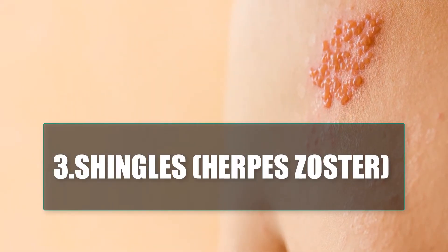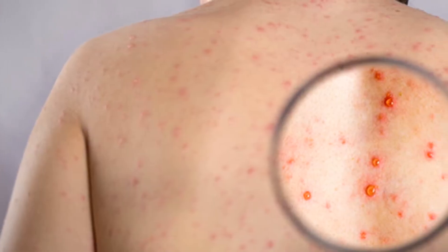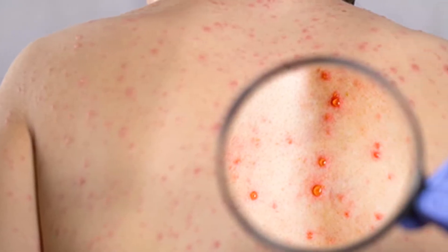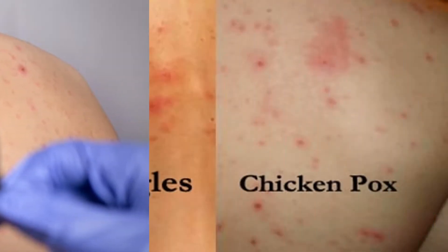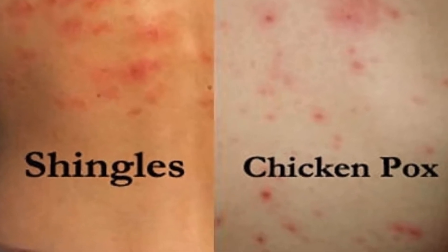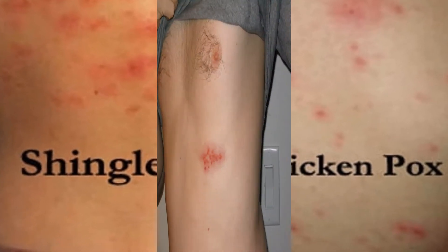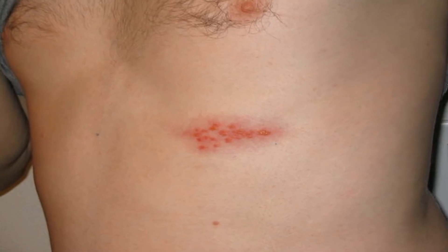Number 3: Shingles, or Herpes Zoster. Shingles is a viral infection that results from the varicella zoster virus, or VZV — the same virus that causes chicken pox. It typically affects a single sensory nerve ganglion and the skin surface that the nerve supplies. It is estimated that 1 in 3 people in the United States develop shingles during their lifetime.